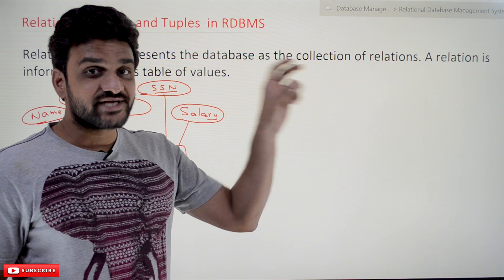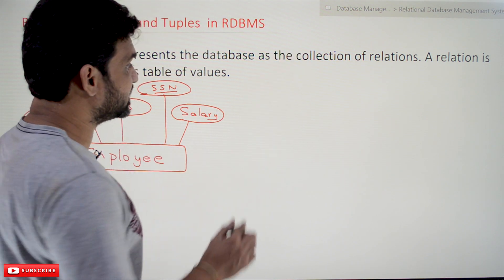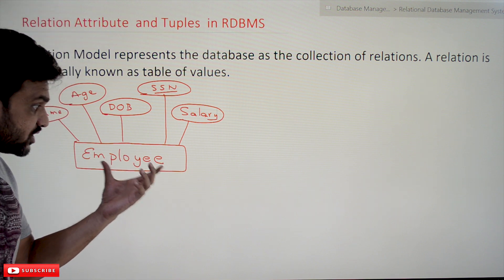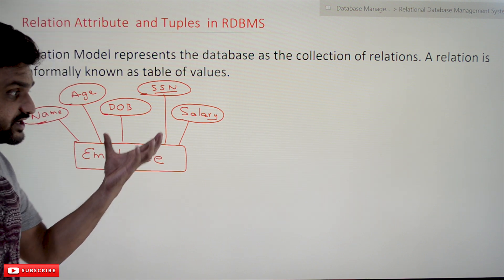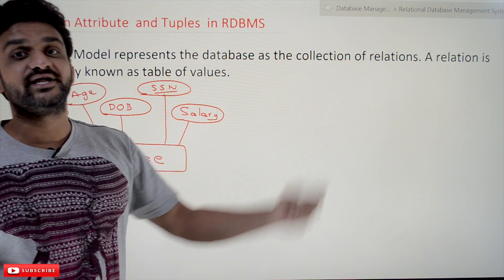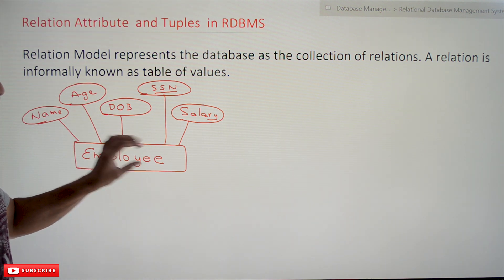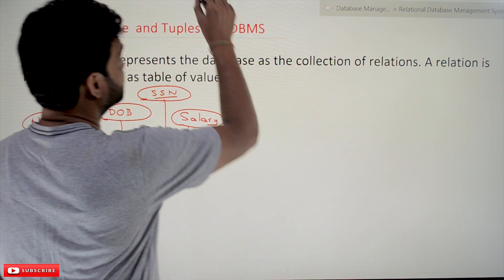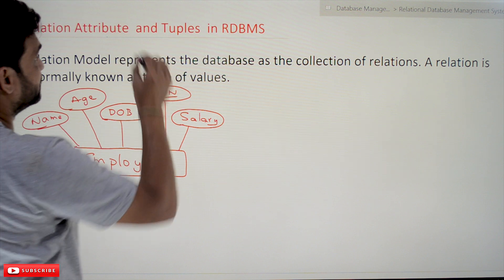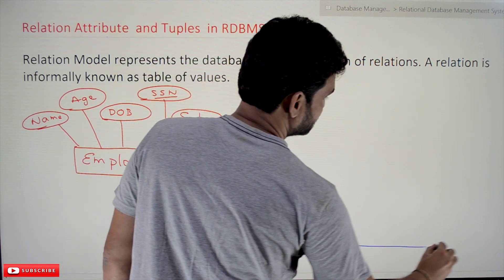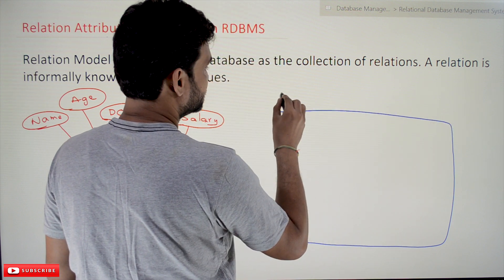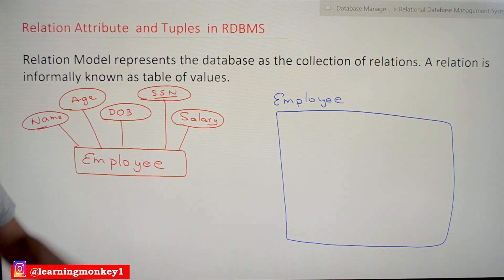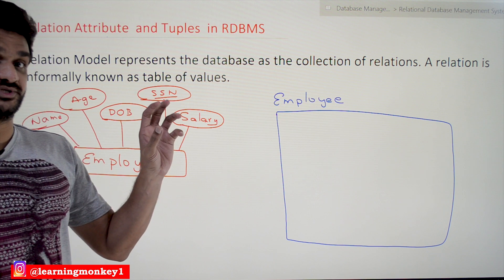The relational model states that a database is a collection of relations, and a relation is informally known as a table of values. So this employee entity type is what we call a relation, or a table. A table consists of rows and columns — from now on, just consider relation as a table.